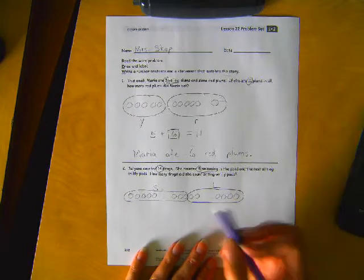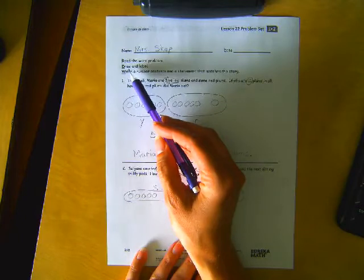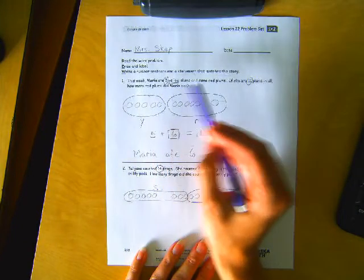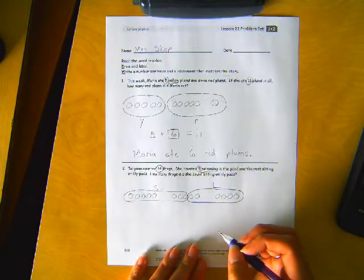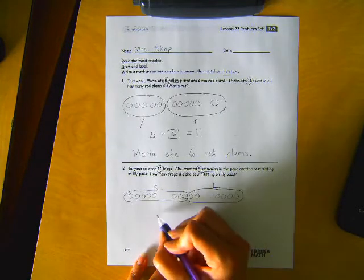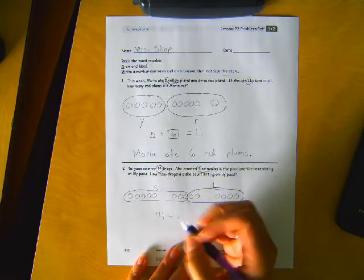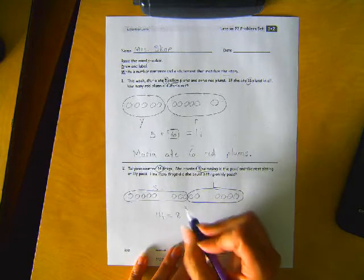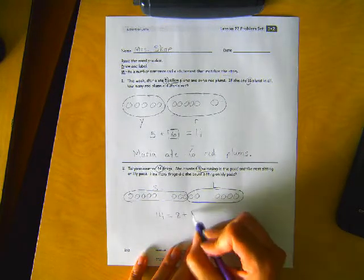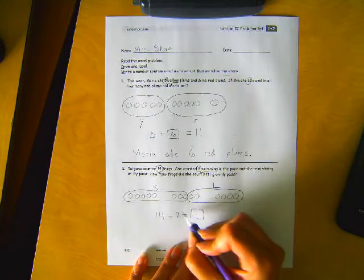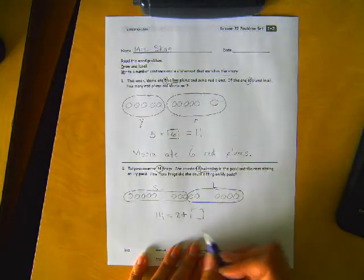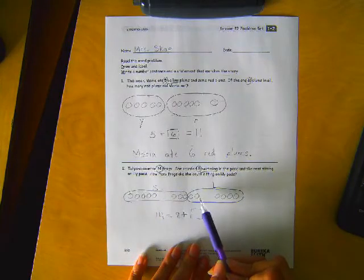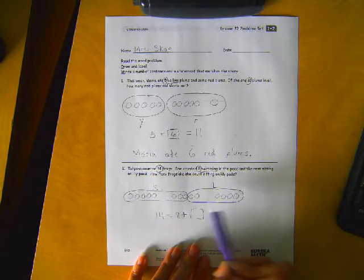Which means the rest of them were the ones that she counted on lily pads. So I'm going to put an L for lily pads. Okay, so we read the word problem. We drew it out and labeled it. So now we need to write a number sentence and a statement. So we have 14 equals 8 plus, and then we didn't know the second add-on. So we know there's 14 total. There were eight swimming. Here are the rest on the lily pads. How many are on lily pads?